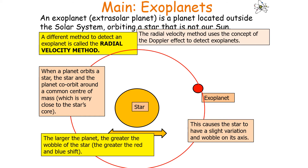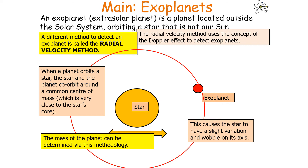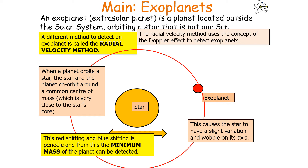The larger the planet, the greater the wobble of the star and so the greater the red and blue shift. The smaller the planet, the less the wobble and so the less the red and blue shift. This allows us to determine the minimum mass of the planet which is causing this effect.